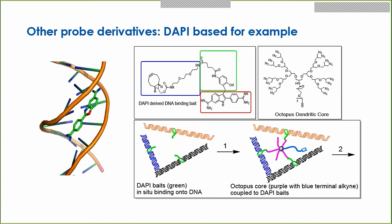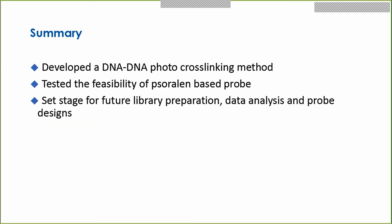In summary, we have developed a DNA-DNA photo cross-linking method with a click enrichment tag and tested the viability of a psoralen-based probe. It worked, but we have a lot of work to do in data analysis and parameter adjustment. It sets the stage for future library preparation and probe design improvements for this approach. I thank members of the Chen lab and our computational collaborator Nanhua from the Frank Alber lab at USC.